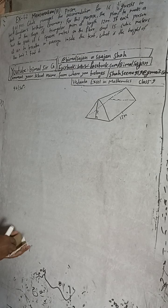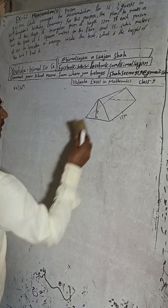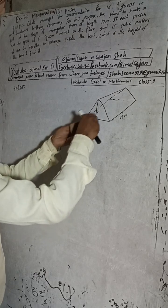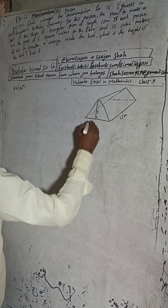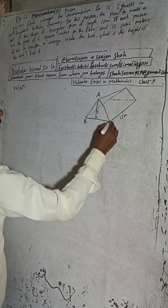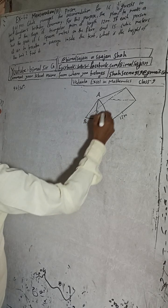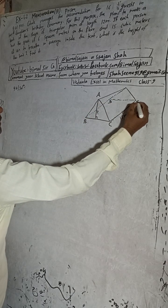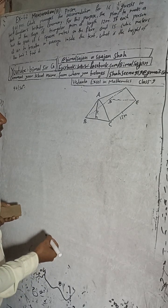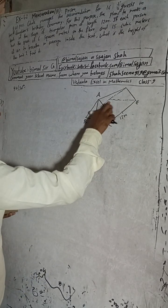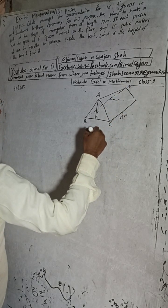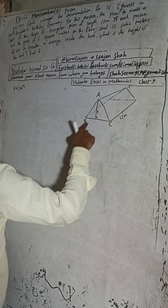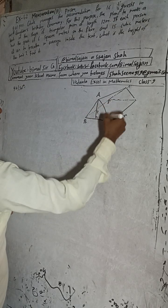In the question, this is our tent in the shape of a triangular prism. The length is given as 12 meters. We have to find the height. I will now name the vertices: A, B, C, D, and E — or we can label them as A, A', B, B', C, C'.